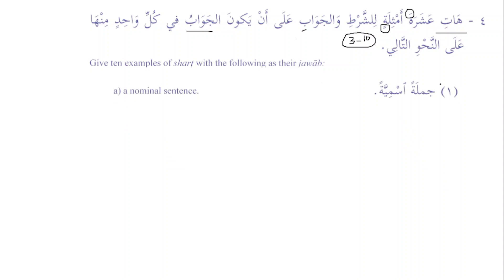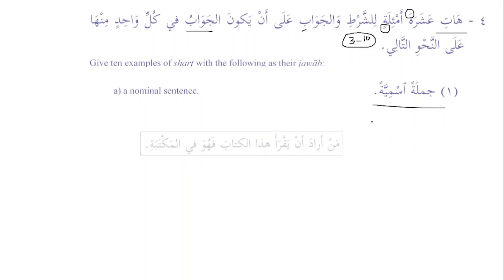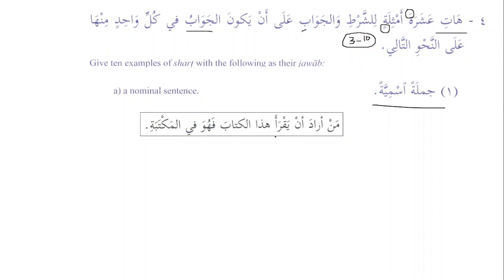The first example: the jawab al-shart should be a jumla ismiyya. 'Man arada an yaqra'a hadha al-kitaba fa-huwa fil-maktabati' — whoever wants to read the book, it is in the library. We can see that the jawab al-shart here is a jumla ismiyya.